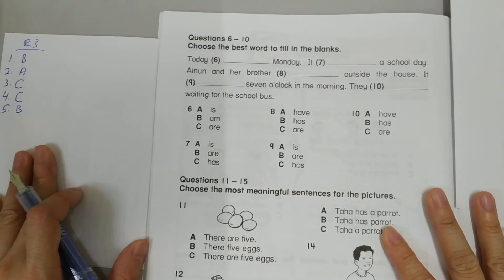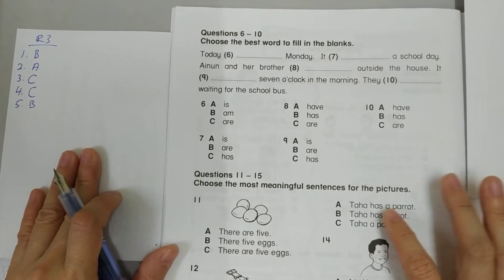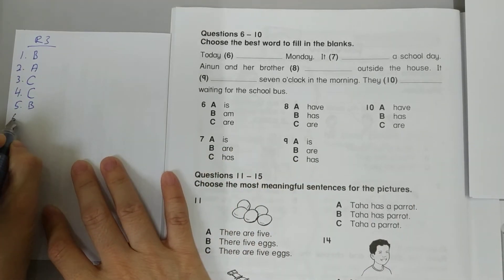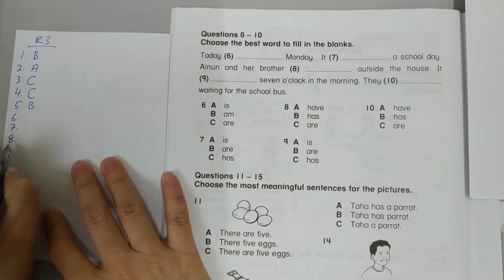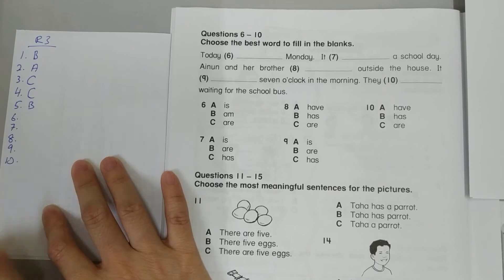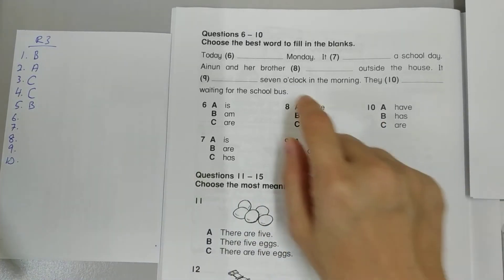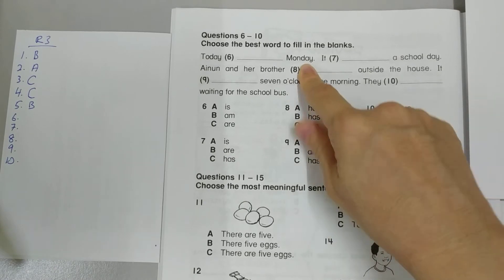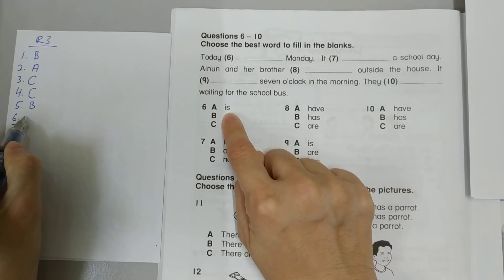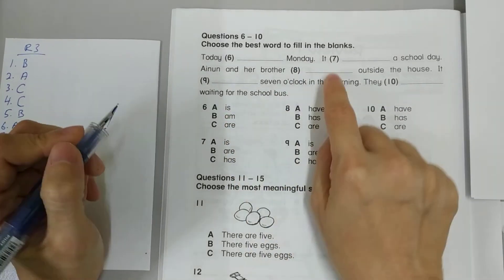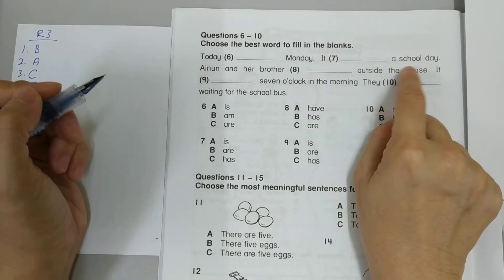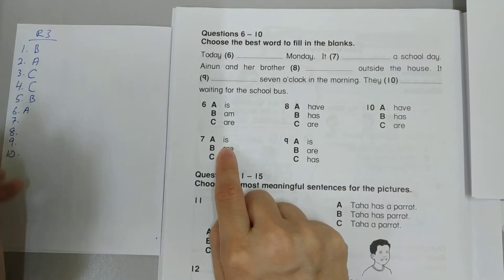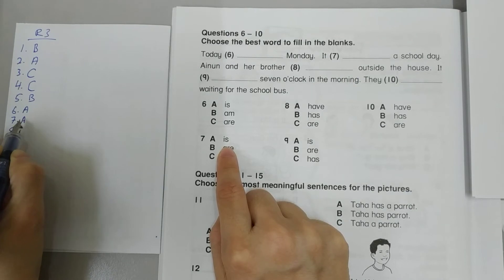Alright then. Now let's look at questions 6 to 10. Let me write it down so it's easy. Okay. It says, today something Monday. Today is Monday. It something a school day. It is a school day.